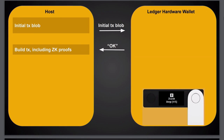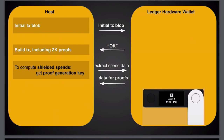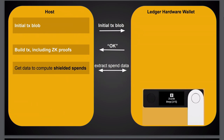Upon user validation, the Ledger signals the host to start building the transaction and zero-knowledge proofs. The host then requests additional information from the Ledger. For shielded spends, the Ledger provides the randomness used to compute commitments — this allows the Ledger to later recompute and verify the commitment value matches what the user accepted. The host also receives proof generation keys from the Ledger to compute the zero-knowledge proofs.